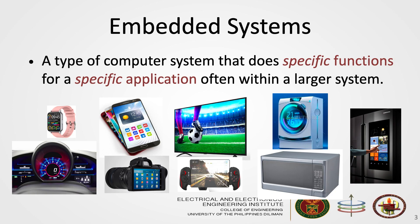So what are embedded systems? An embedded system is a type of computer system that does specific functions for a specific application, often within a larger system. You have to take note of the words 'specific functions' and 'specific application.' They are different from general computer systems like personal computers, where you can do a lot of functions for many applications that you want.